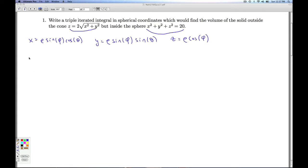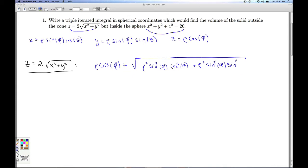So let's look at this equation. z equals 2 square root x squared plus y squared. I make the substitutions. I get rho cosine phi equals the square root of rho squared sine squared phi cosine squared theta plus rho squared sine squared phi sine squared theta.